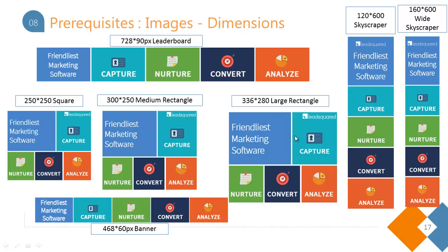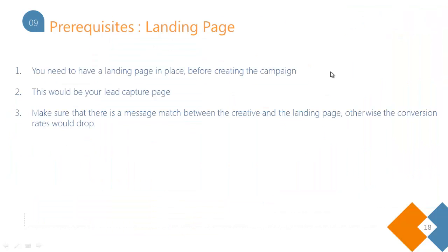Other available sizes include the banner at 468×60 pixels, the skyscraper at 120×600 pixels, and the wide skyscraper at 160×600 pixels. The second prerequisite is your landing page — because you need to decide what action you want your audience to take once they click the ad.